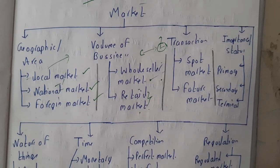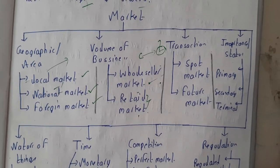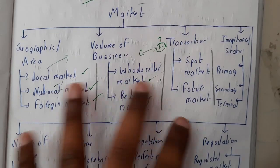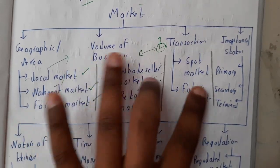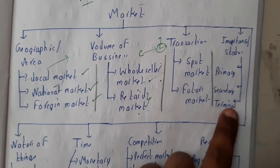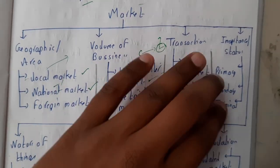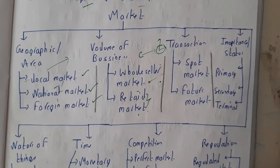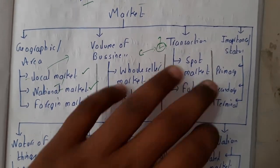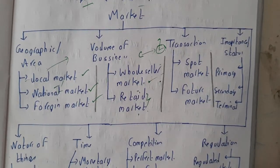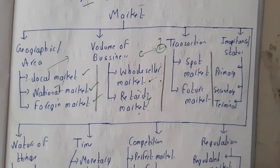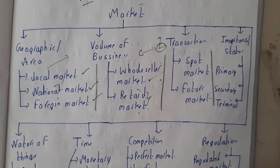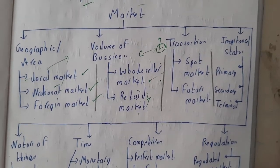Hello guys, we are back with our next lecture. In this lecture, let us continue with the different types of markets. So till now we are done with the first three types. According to the status of the product, we will be defining them. Primary means it is in the initial stages, secondary means it is semi-famous, and terminal means it is a complete product.